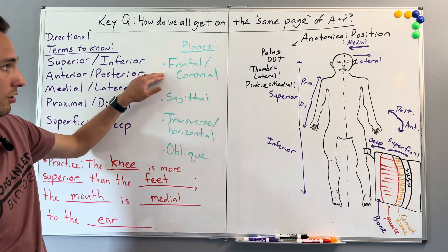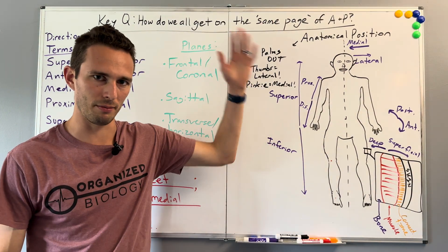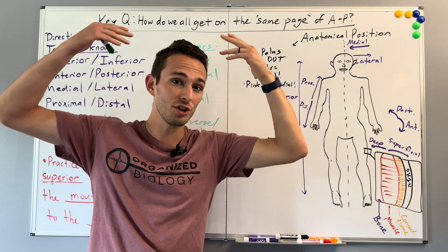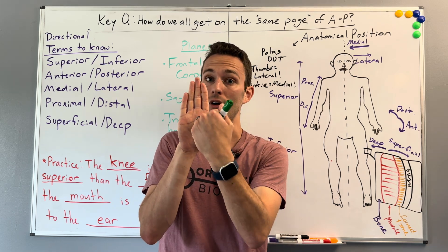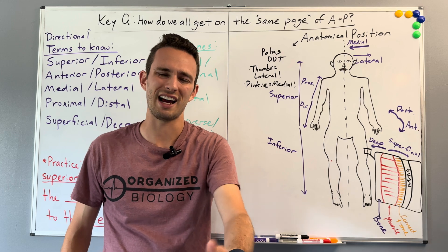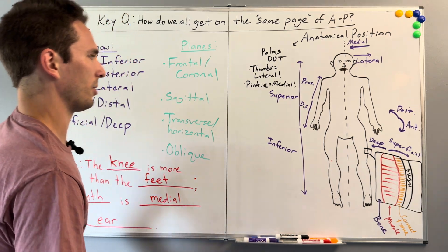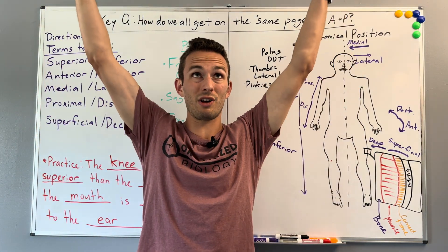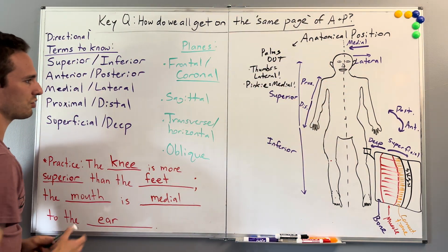The frontal or coronal plane separates the body from front to back. Drawing that plane through the person's body, we can peek inside as if opening a book and looking at the insides from the front or the back. Why is it called the coronal plane? Because corona means crown — when you crown somebody like this, you're separating front from back. That is the frontal or coronal plane.